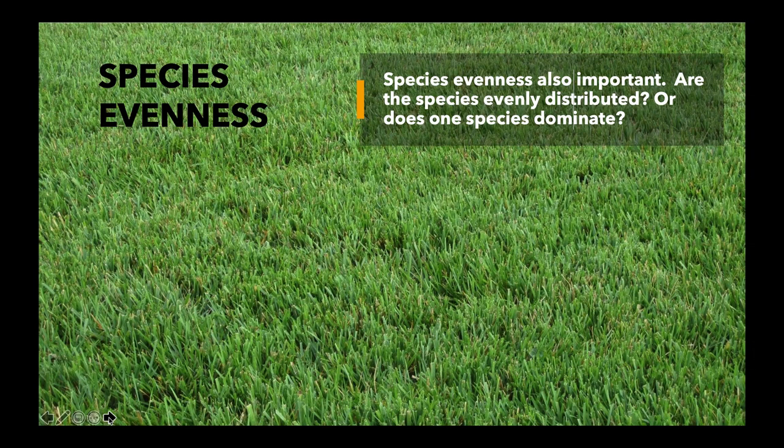There's also species evenness. The soccer field does not have much evenness because it's dominated by one kind of plant. We ask for species evenness: are the species evenly distributed, or does one species dominate?